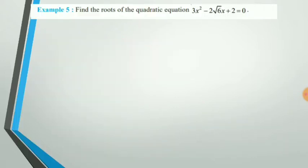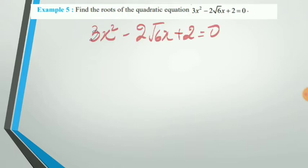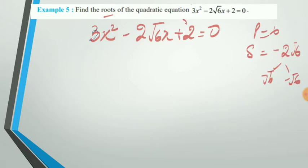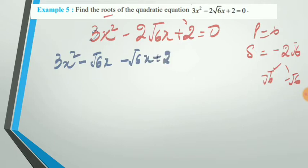Let us find the roots of the quadratic equation 3x² - 2√6·x + 2 = 0. Again, we will use the splitting of the middle term. The product is 3 × 2 = 6, and the sum needed is minus 2√6. So we split and write: 3x² - √6·x - √6·x + 2 = 0.